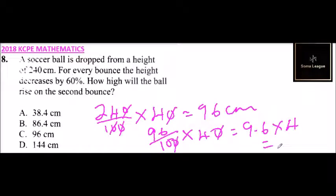When you multiply that, you should get 38.4 centimeters. So the first bounce will be 96, the second bounce the ball will rise to a height of 38.4. If you look at the answers provided, A is the correct answer.